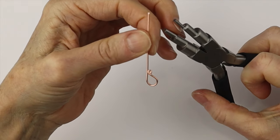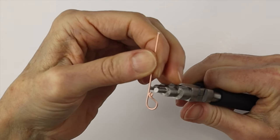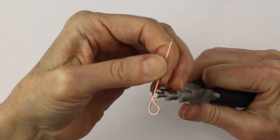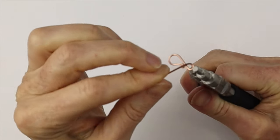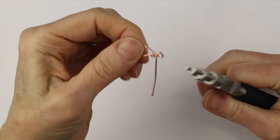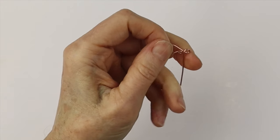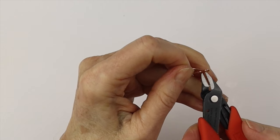From there we need to do a little loop on the other end. We'll take another part of the looping pliers to match the loop on the other side of the clasp and we're going to do a little loop there.